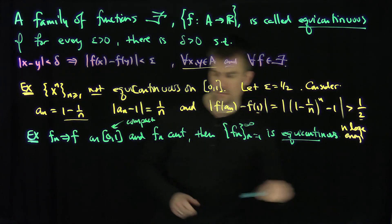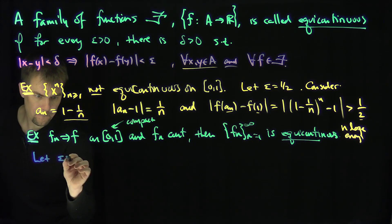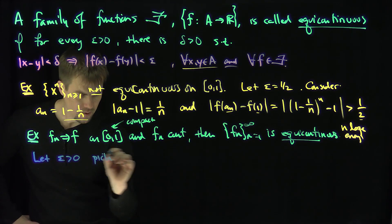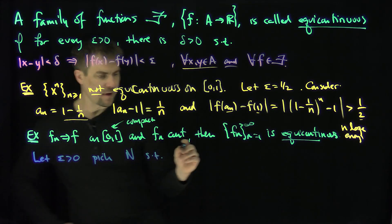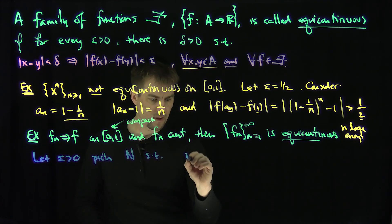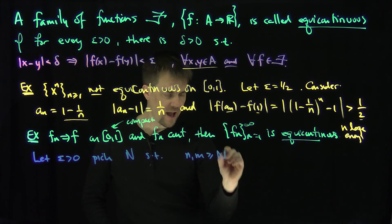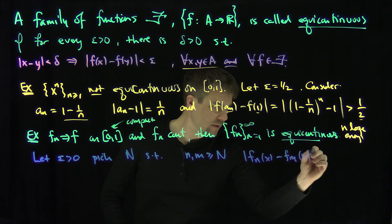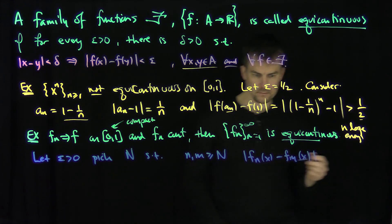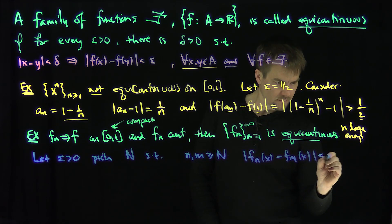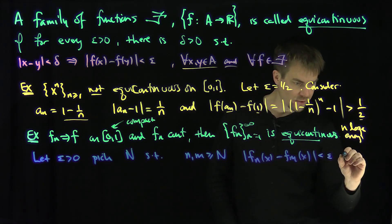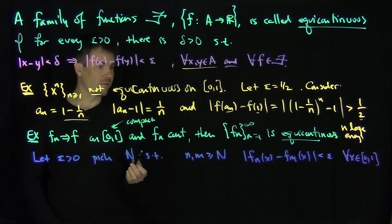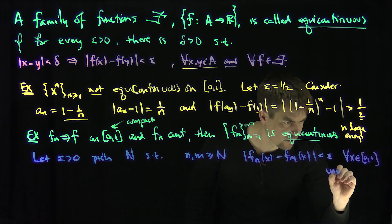Let epsilon be greater than zero, and pick capital N such that if n and m are both greater than or equal to N, then the absolute value of F_n of x minus F_m of x is less than epsilon, for all x in zero, one. We can do this because the sequence converges uniformly — we are using uniform convergence here.